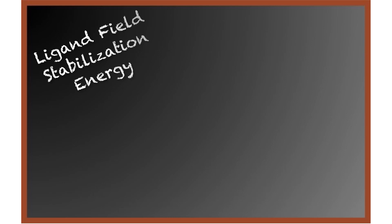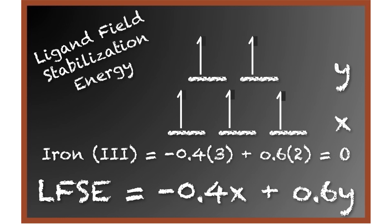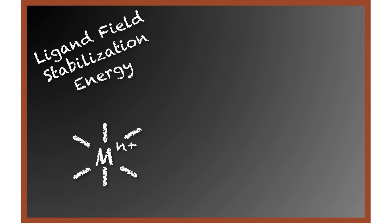Ligand field stabilization energy can determine the preferred geometry of an ion. The LFSE for iron 3 is zero, which means there is no other ligand position that would provide a lower energy. Therefore, sterics rule. Usually D5 metal ions form an octahedral complex when bound to six ligands, since the bond angles provide the least steric hindrance.